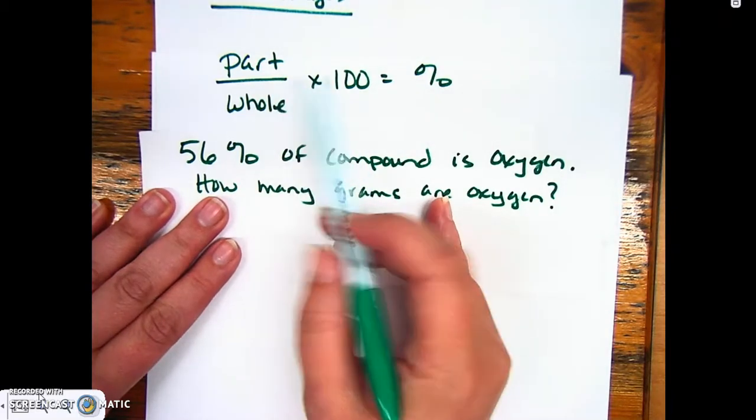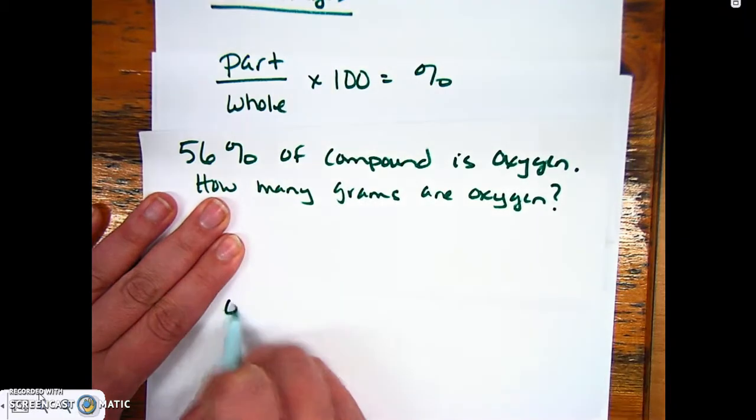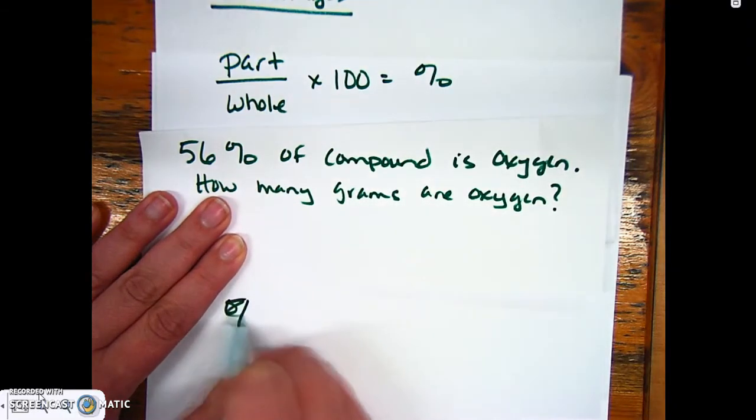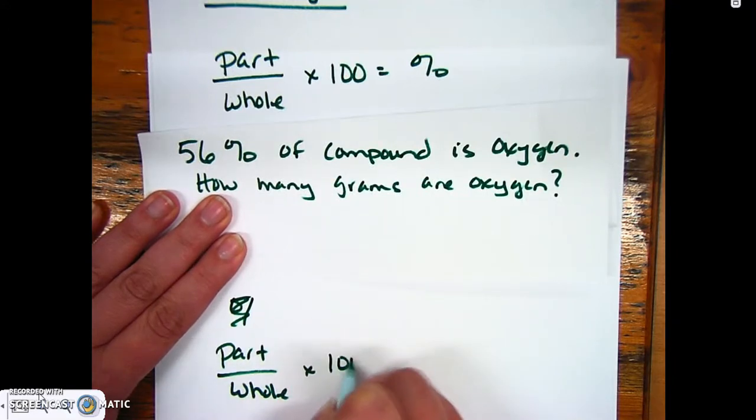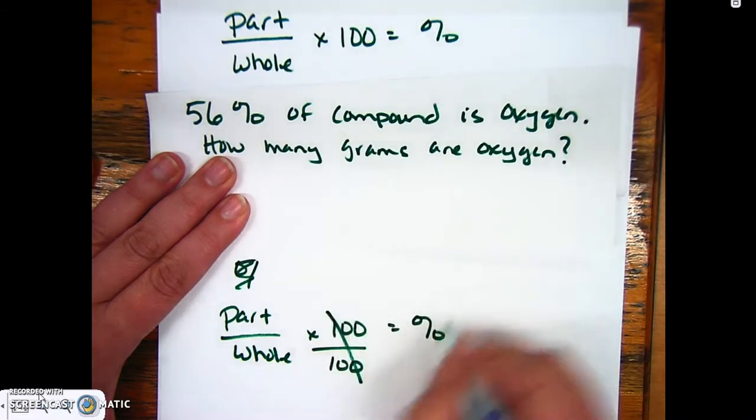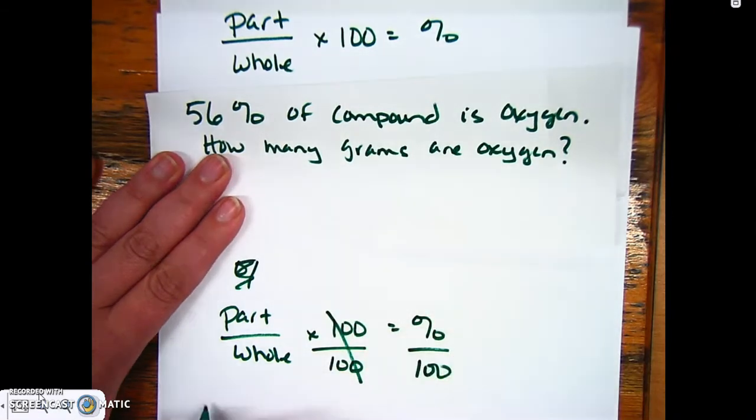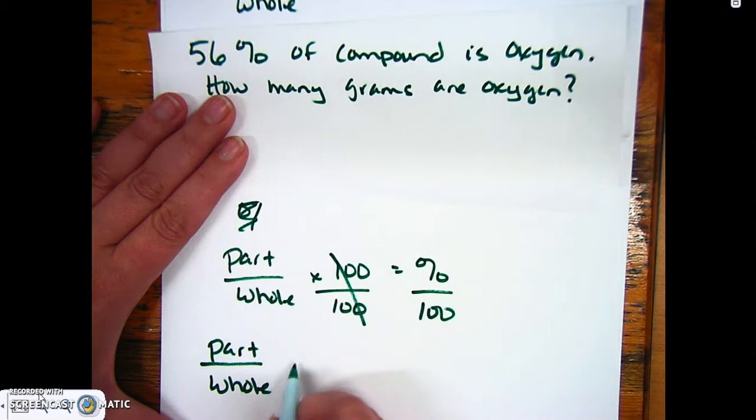The first thing is this is multiplied by 100, so I'm going to divide by 100. Part over whole multiplied by 100 equals my percent. We divide by 100 on both sides, so what I've got is part over whole equals the percent over 100.